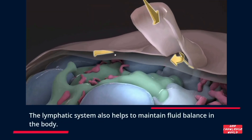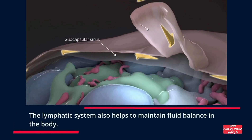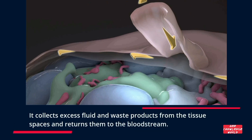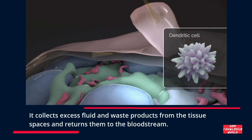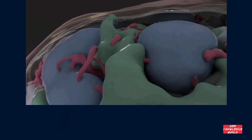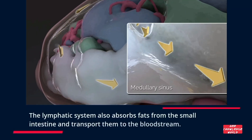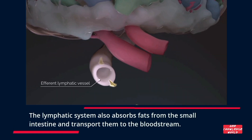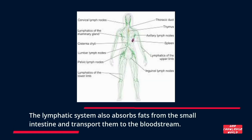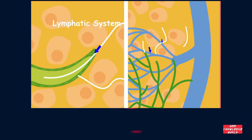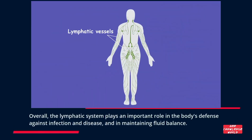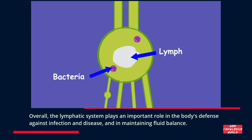The lymphatic system also helps to maintain fluid balance in the body. It collects excess fluid and waste products from the tissue spaces and returns them to the bloodstream. The lymphatic system also absorbs fats from the small intestine and transports them to the bloodstream.